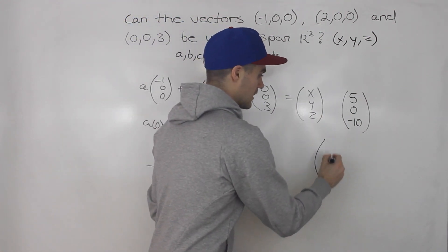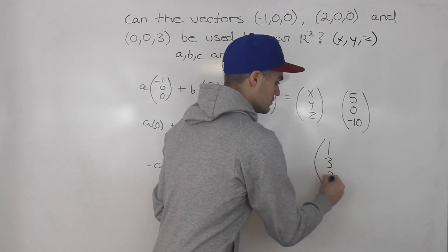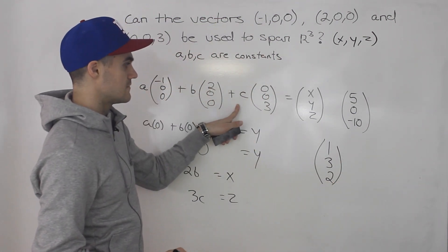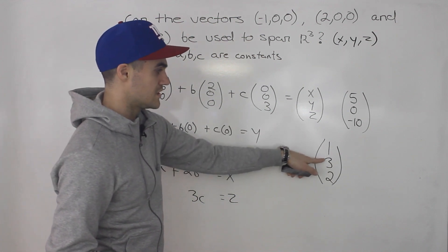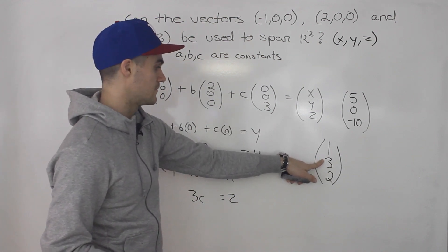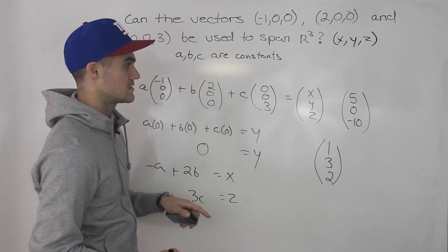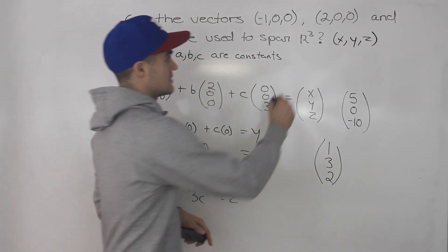But for example, if we pick a vector maybe (1, 3, 2), we can't find a, b, c constants to give us this because that y value is 3. And notice here with these vectors, the y value always has to be zero.